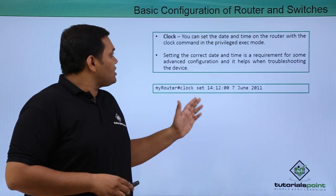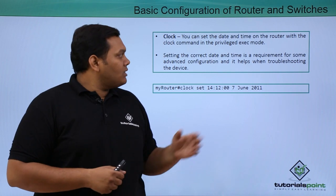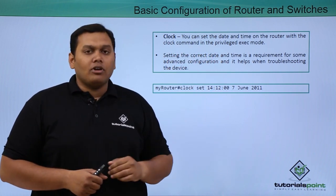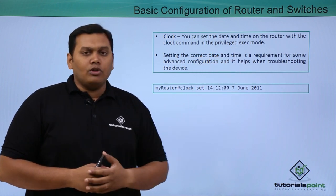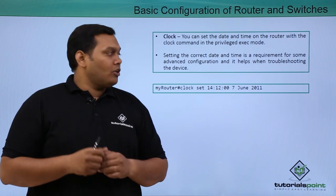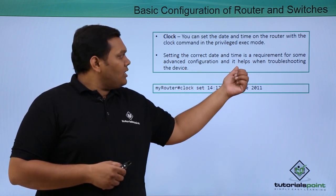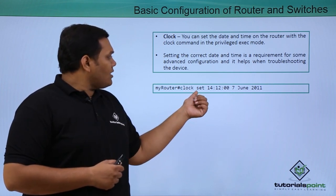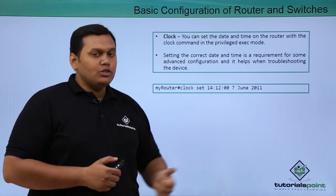The next one is about the clock. You can set the date and time of the clock, so that it helps in the troubleshooting of your router, and it has to be done in the privileged executive mode. Setting the correct time and date is a requirement in advanced configuration to help with troubleshooting. You can see the router clock set to the specified time, date, and year.